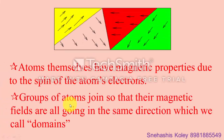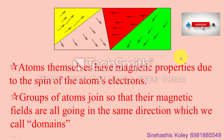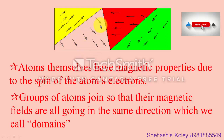We discussed how a magnetic field is generated in an atom. Now we will discuss how a magnetic field is generated in a substance. A substance is composed of numerous atoms. When these atoms align themselves according to their magnetic field in the same direction, they form a domain. In this substance, four domains are shown in four different colors. In each domain, the magnetic fields of all atoms point in a fixed direction. However, different domains point in different directions, so the total magnetic field of the substance becomes zero.